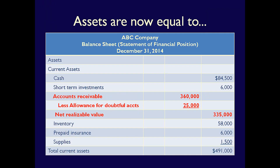On our balance sheet, we would show the following under current assets: Accounts Receivable, $360,000; less Allowance for Doubtful Accounts, $25,000. We don't have to put a negative in front of the $25,000 because the word 'less' is in front of the Allowance for Doubtful Accounts, which indicates that $25,000 is negative. Net realizable value — the value that we'll realize in cash over the next 12 months — is therefore $335,000. That is the future economic benefit we expect to receive from these accounts receivable.